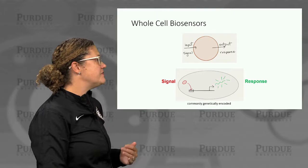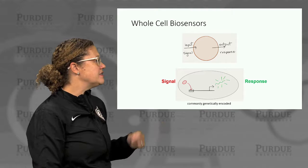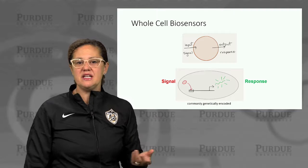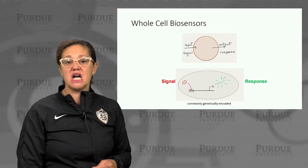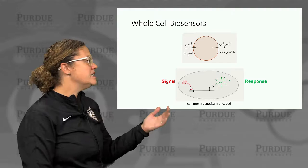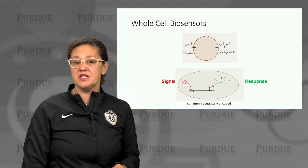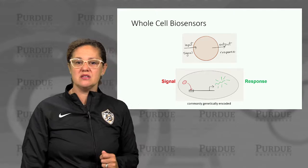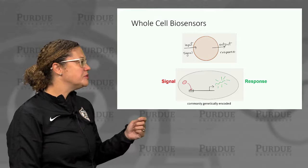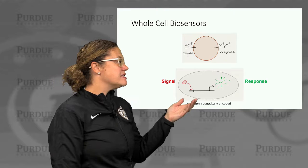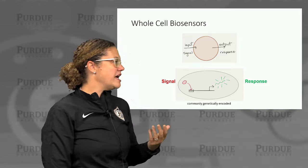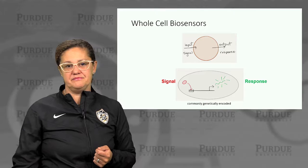Moving on to sensors — we'll talk more about sensors in upcoming lectures. At a high level, a cell can be used as a sensor. A sensor takes an input signal and converts it into some measurable output signal. The simplest articulation is to engineer a simple genetic encoding sensor, where transcription produces a response signal — often a fluorescent or luminescent molecule that produces light we can easily measure — controlled by some input signal we're interested in measuring. By this simple genetic circuit, we get a light response produced from a chemical input signal.